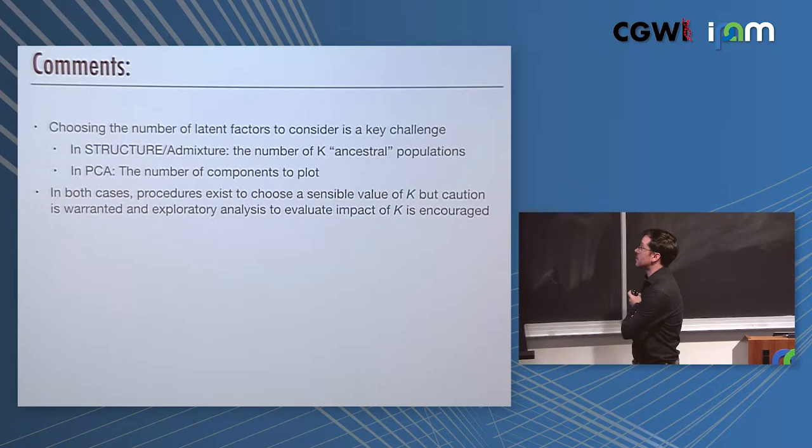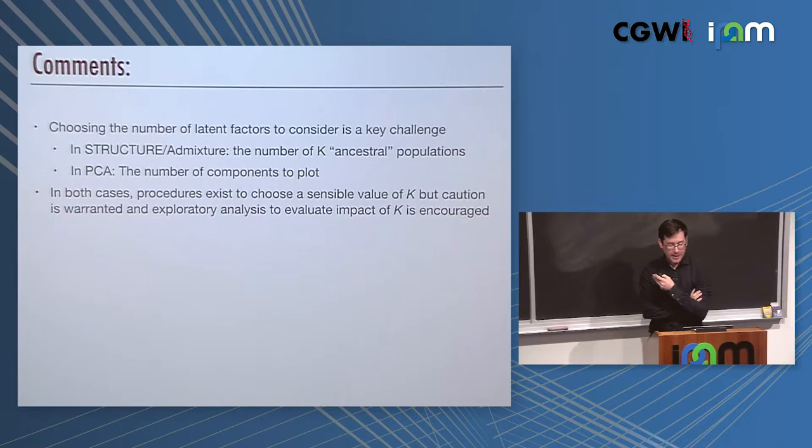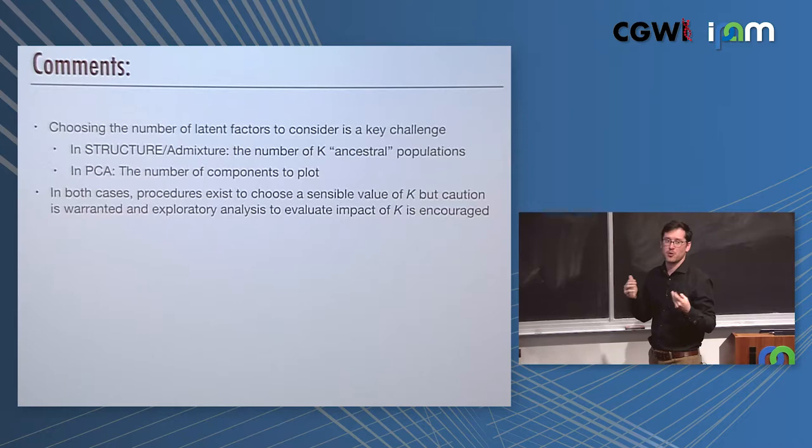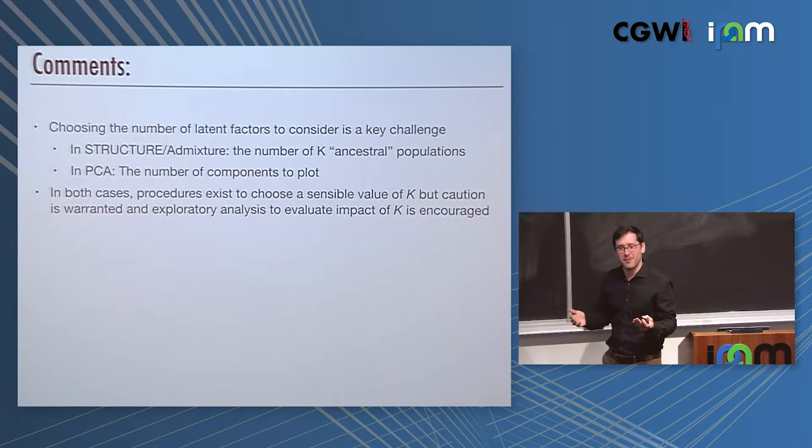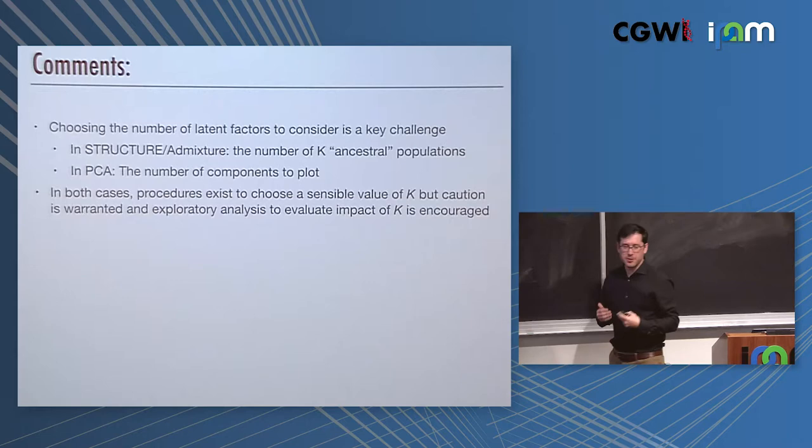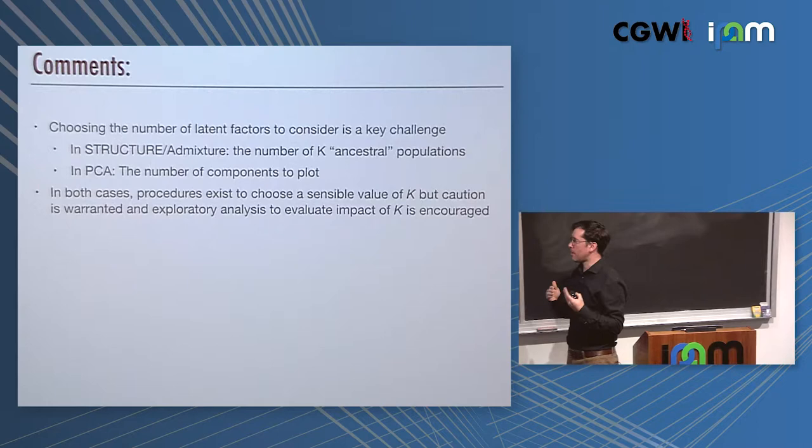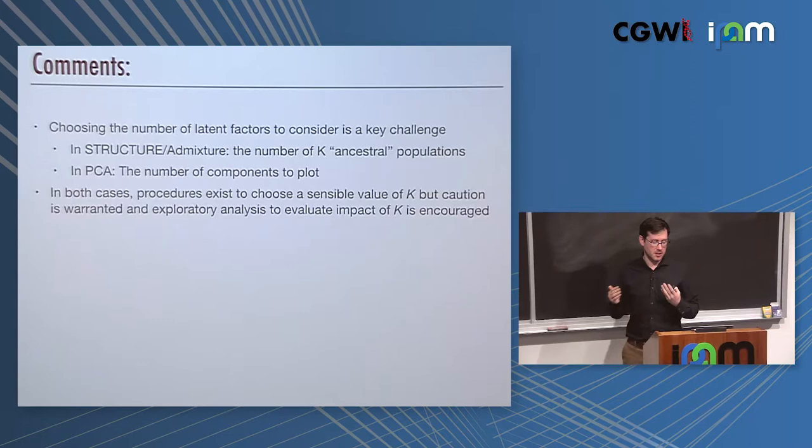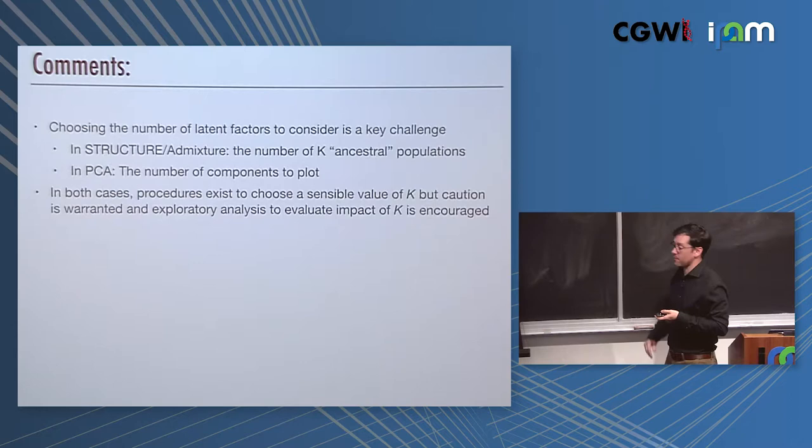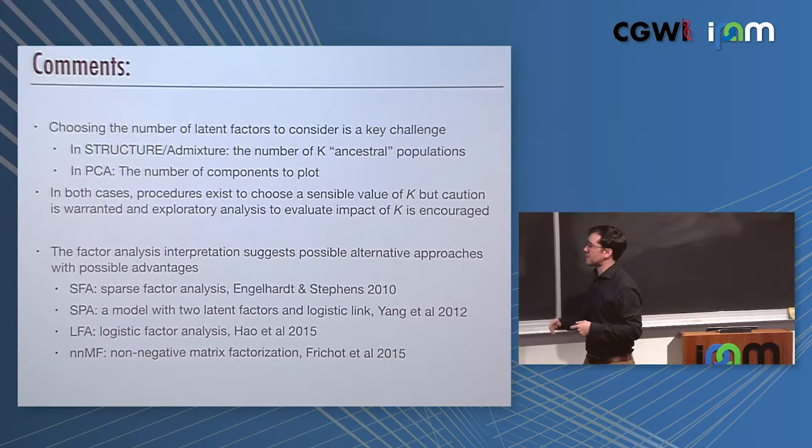Choosing the number of latent factors in any of these approaches is a key challenge. In Structure, it means knowing the number of K ancestral populations to use when you fit the model. In PCA, it means the number of components to plot or to explore. In both cases are procedures that exist to try to choose a sensible value of K, but most of those are a bit unstable. In general, the recommendation in the field is to view this as exploratory analysis and to evaluate the impact of K and look across different values. This factor analysis interpretation is useful because it suggests possible alternative approaches with different advantages.